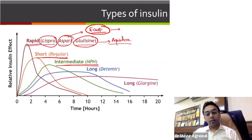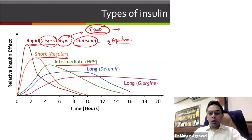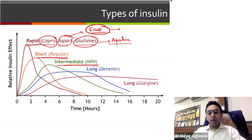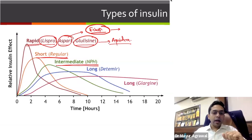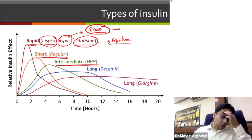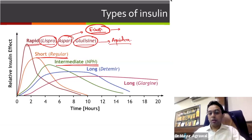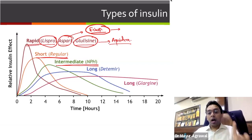FIASP is really good for kids with erratic dietary patterns. Once you inject insulin the child may not eat, leading to hypo. FIASP can be given even after the meal — if the child had two chapatis, you give this many units. We now have data showing that even if given 20 minutes after the meal, it is equally effective. So that is really good.